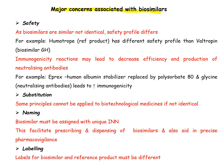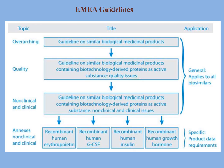These are the major concerns associated with biosimilars: safety, substitution, naming, and labeling. Naming and labeling matter a lot to facilitate prescribing and dispensing of biosimilars and aid in precise pharmacovigilance. Regarding safety, since biosimilars are similar but not identical, the safety profile may differ — for example, Genotropin has a different safety profile than Valtropin. Immunogenicity reactions may also lead to decreased efficiency and production of neutralizing antibodies. For example, Aprex human albumin stabilizer replaced by polysorbate 80 and glycine led to neutralizing antibodies and increased immunogenicity.